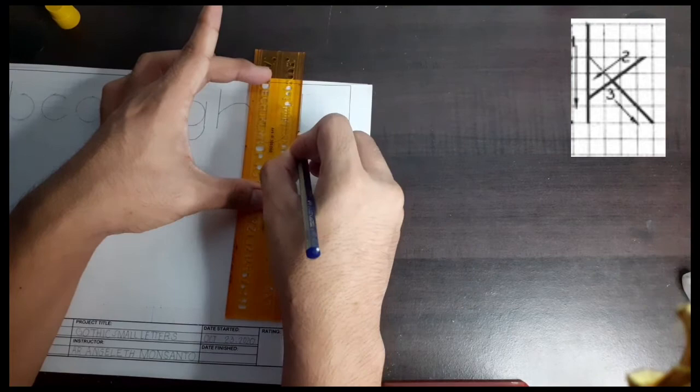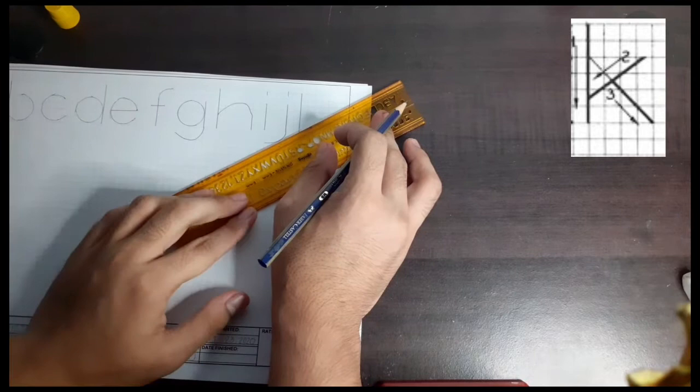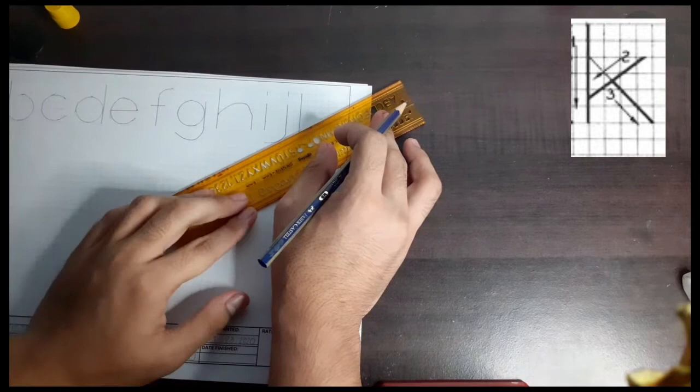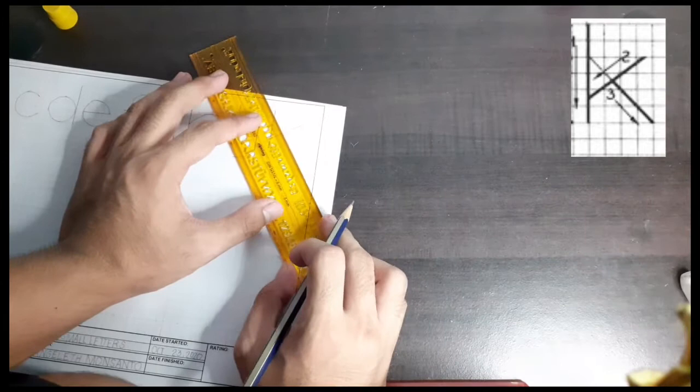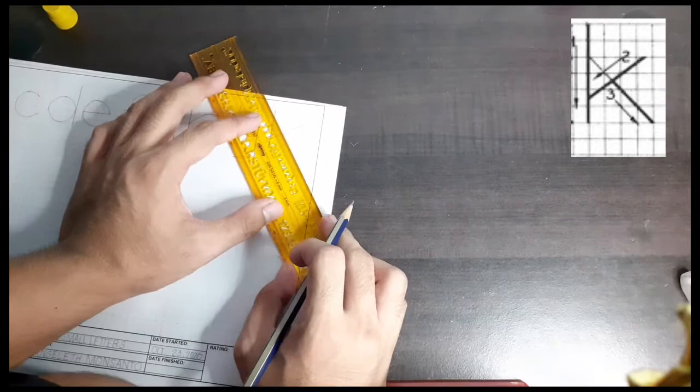Writing letter K is quite different from the other letters. We have to make sure that we have clearly copied what is depicted in the picture. First drawn is its vertical line going downwards. Second is its slanting on the upper corner. And lastly is its slanting on its lower corner.